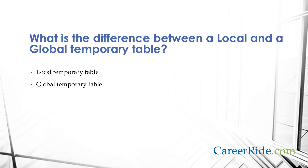What is the difference between a local and a global temporary table? A local temporary table exists only for the duration of a connection. A global temporary table remains in the database permanently, but the data exists only within a given connection. When the connection is closed, the data in the global temporary table disappears. However, the table definition remains with the database for access when the database is opened next time.